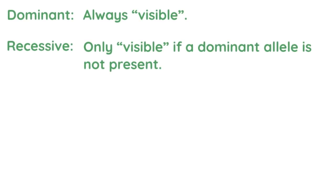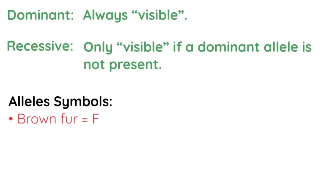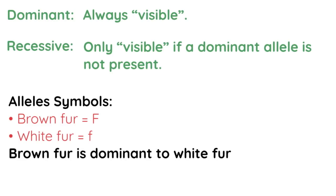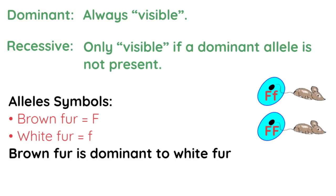We can use symbols for alleles — typically just letters, using capital and lowercase. In this case, brown fur for the mouse would be capital F, and white fur would be lowercase f. The fact that brown is capital F tells us that brown fur is dominant to white fur. So if a mouse had one capital F allele and one lowercase f allele, it would be brown because the brown fur allele is dominant. Only if it had two lowercase f alleles would it appear white.